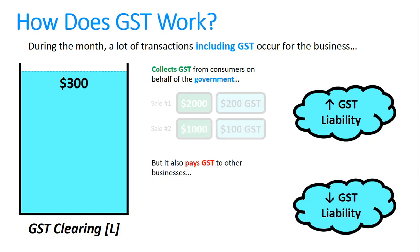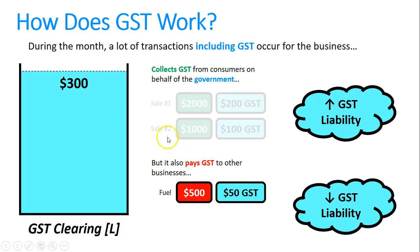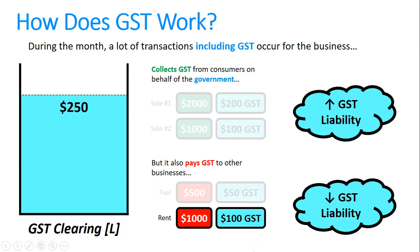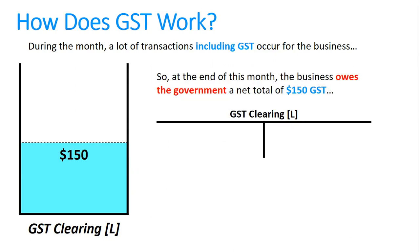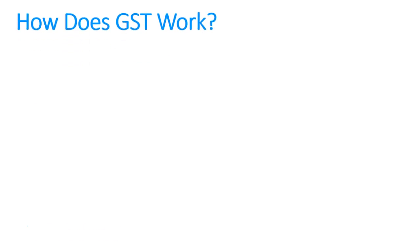However, the government set up the system so you don't have to give the government the whole three hundred dollars, because the business might have also paid some GST. If it paid five hundred dollars for fuel plus fifty dollars GST, that fifty dollars reduces the liability to two hundred and fifty dollars. If rent of one thousand dollars also had GST of one hundred dollars, the business would only owe the government one hundred and fifty dollars — and since we owe money, that's a liability on the credit side.